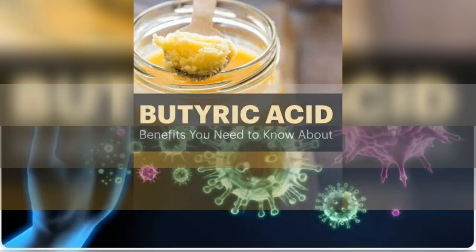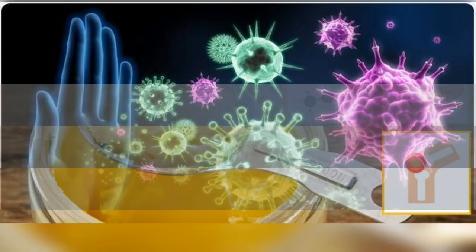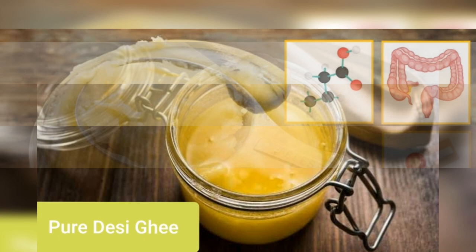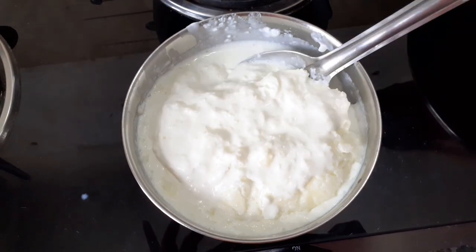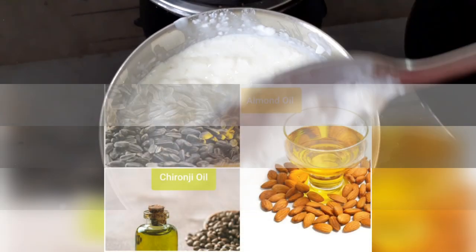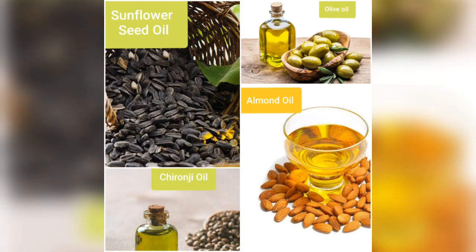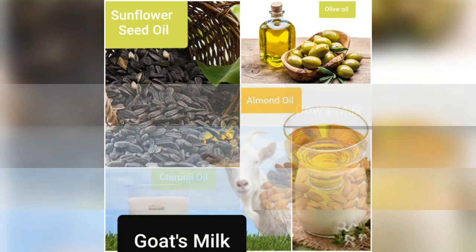What is butyric acid? It is an immunity booster. Where is it present? It is present in healthy fats such as pure desi ghee, white fresh butter, sunflower oil, olive oil, kudappa oil, almond oil.